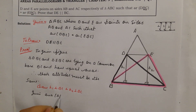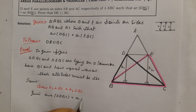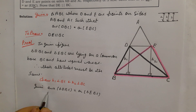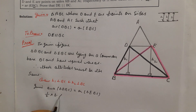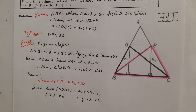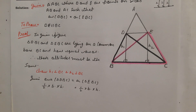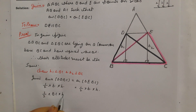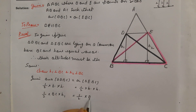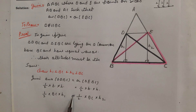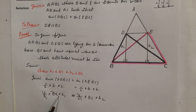Given: area of triangle DBC equals area of triangle EBC. Using the area formula — half times base times height — we get: half times BC times H1 equals half times BC times H2. Since BC and the factor of half are common to both sides, they cancel out.